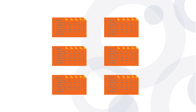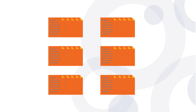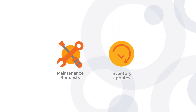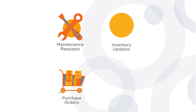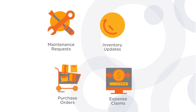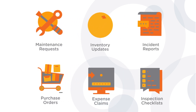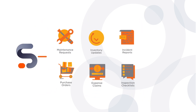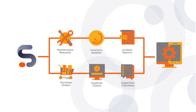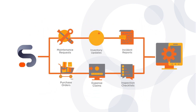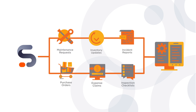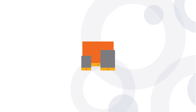RocketCo retail is gearing up to revolutionize its operations by diving headfirst into automation. Currently, the team is overwhelmed with various manual tasks — from inventory updates, maintenance requests, purchase orders, expense claims, incident reports, and inspection checklists. Enter Sodi Snap, the one-stop shop that streamlines all these processes into one neat package, with no more endless paperwork and redundant manual tasks for employees.